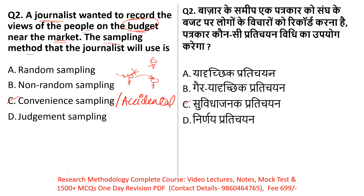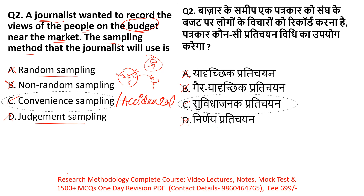The journalist is using Pratichayan Vidhi — Convenience and Accidental Sampling. The incorrect options include random sampling: random sampling means selecting people at random from a population, but researchers cannot do true random sampling this way. The option of non-random sampling is also noted — researchers don't randomly select members. Judgment sampling would also be incorrect. The correct answer is Option C: Convenient Sampling, which we call Suvidha Janak Pratichayan.